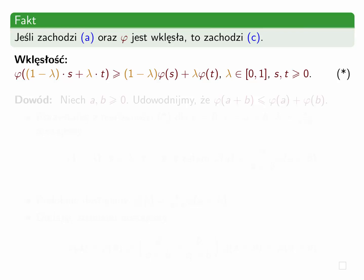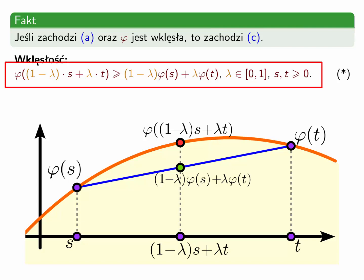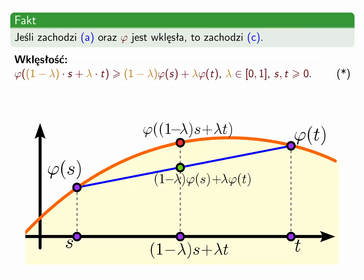Fakt ten traktuję jako ciekawostkę. Przypomnę pokrótce, co oznacza wklęsłość. Funkcja jest wklęsła, jeśli zachodzi nierówność φ(λs + (1−λ)t) ≥ λφ(s) + (1−λ)φ(t) dla dowolnych argumentów s, t oraz dla dowolnego parametru λ. Oznacza ona, że w układzie współrzędnych zielony punkt leży poniżej czerwonego punktu dla dowolnych s, t i λ — cały odcinek łączący punkty wykresu leży poniżej wykresu funkcji.